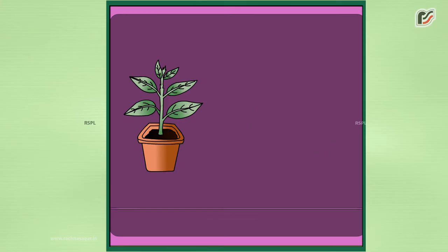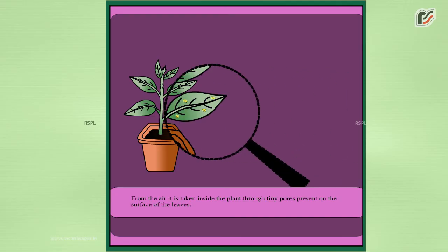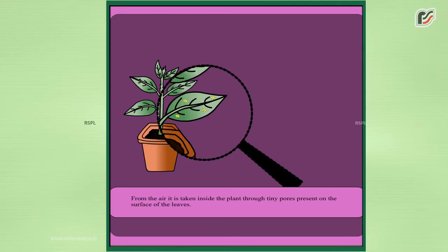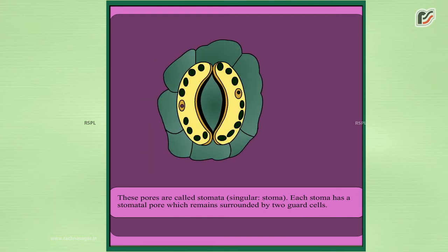From the air, carbon dioxide is taken inside the plant through tiny pores present on the surface of the leaves. These pores are called stomata.